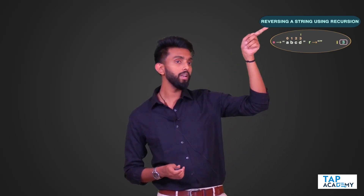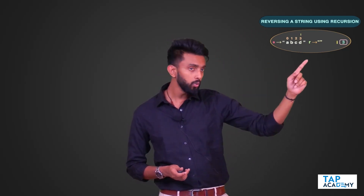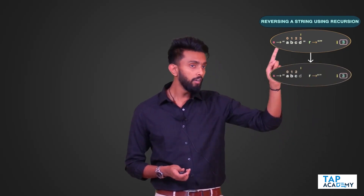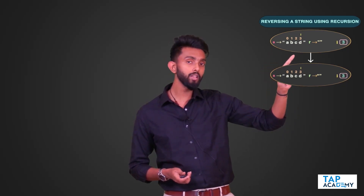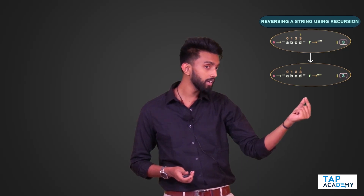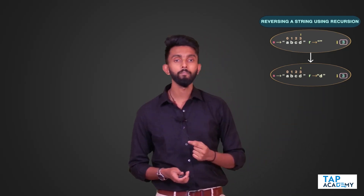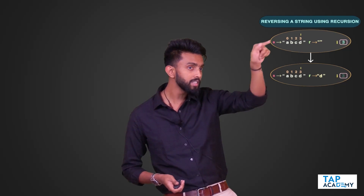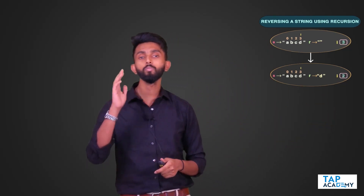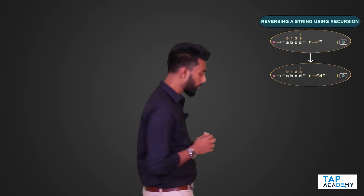`i` is currently pointing at the last character D. I'll call the same function, pass the same string `s`, take the character at the last position and concatenate it to `R`. Then in the next call I subtract 1 from `i`, so `i` goes from 3 to 2.